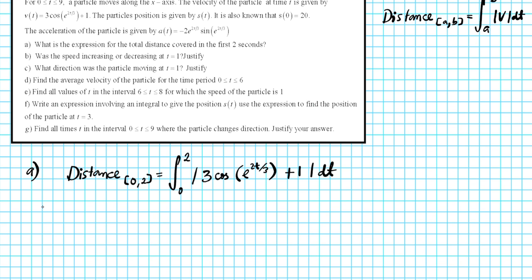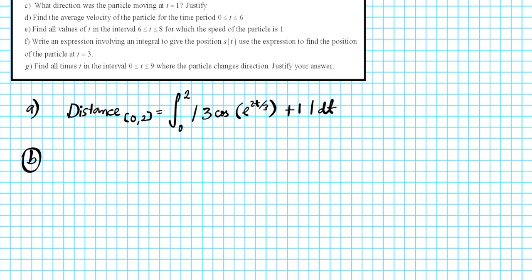Now Part B: Is the speed increasing or decreasing at t = 1? Justify. I normally use a coordinate system — four quadrants — to determine the direction of the speed and if it's increasing or decreasing. So let's set up our coordinate system. We're going to call the x-axis our velocity and our y-axis acceleration.